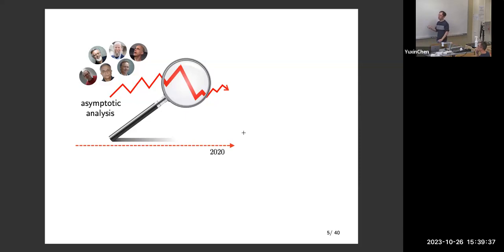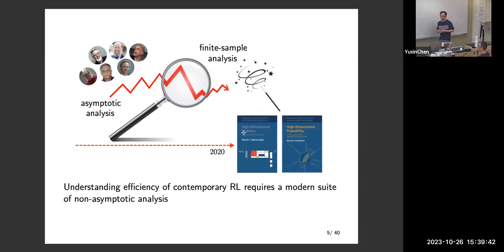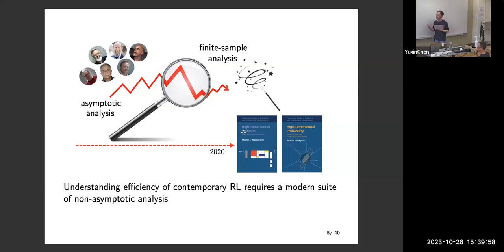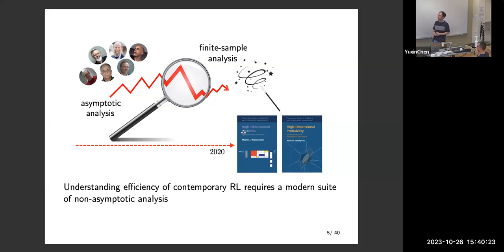In these cases, you probably have to take a step back and consider a more finite-sample, finite-horizon, finite-time kind of analysis, in order to better account for the impact of salient problem parameters like the size of the state space, size of the action space, and horizon length. Fortunately, there are a lot of new theoretical tools developed in the past few years, particularly in high-dimensional probability and high-dimensional statistics.